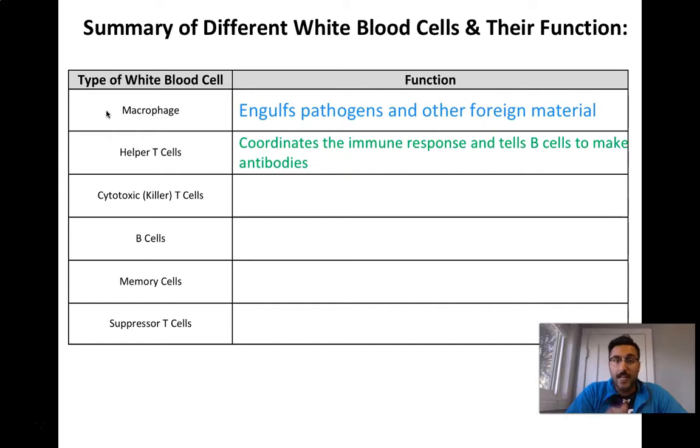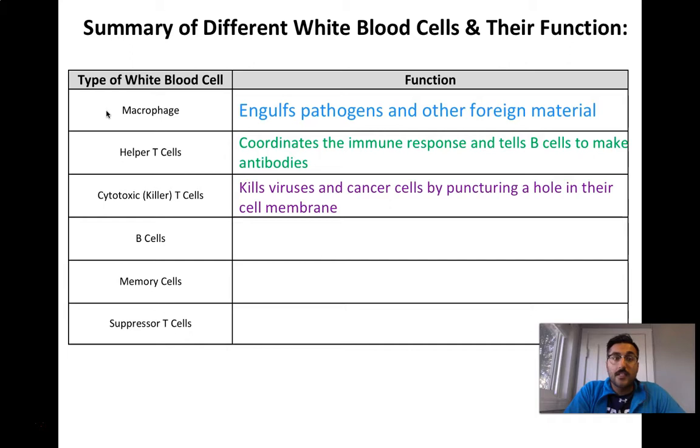So there's always a specific antibody for a specific antigen on a pathogen. So antibodies will bind to and trap antigens or molecules or pathogens which have those antigens on them. Killer T cells, or in other words, cytotoxic T cells, kill viruses and cancer cells by poking a hole in them. So these killer T cells basically go stabby stabby and they stab the pathogen cell until the pathogen cell ruptures and dies.